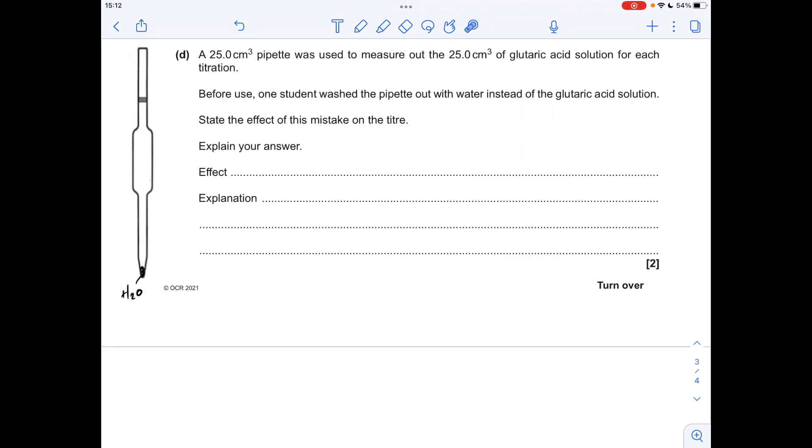So moving on to the final part now, we've got this student who's washed the pipette out with water instead of the glutaric acid solution. Obviously you're meant to wash these things out with the solution that's going to go into it, but the student hasn't, they've used water. So imagine there's a tiny bit of water in the bulb there, so what will be the knock-on effect on the titer? Well if you think about the glutaric acid the student's going to have measured out in there, it's going to have slightly less moles of glutaric acid in than it should have, so the acid is slightly more dilute or slightly less concentrated. So what's going to be the knock-on effect of the titer if you haven't got as many moles of acid in the titration? Well the titer is going to be lower, isn't it? You're not going to need as much sodium hydroxide to neutralise the acid. Right, thank you.